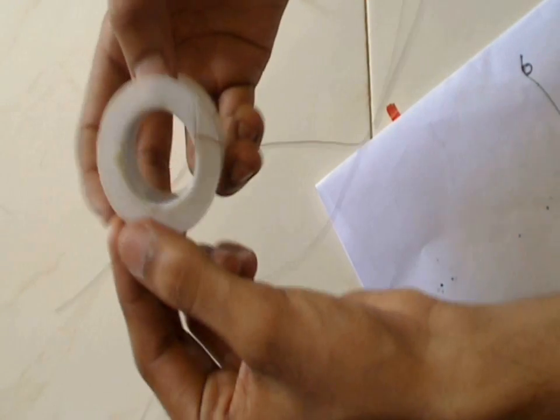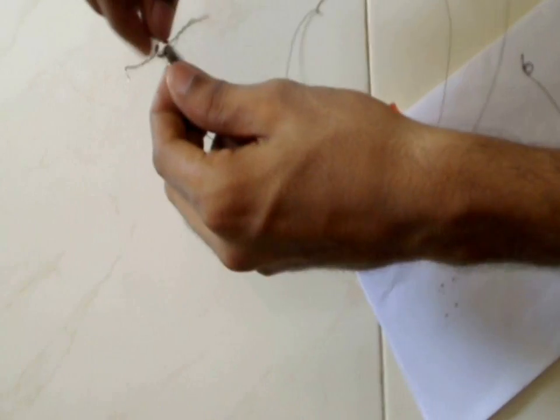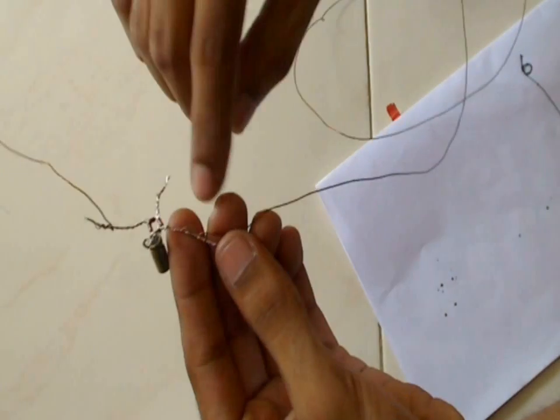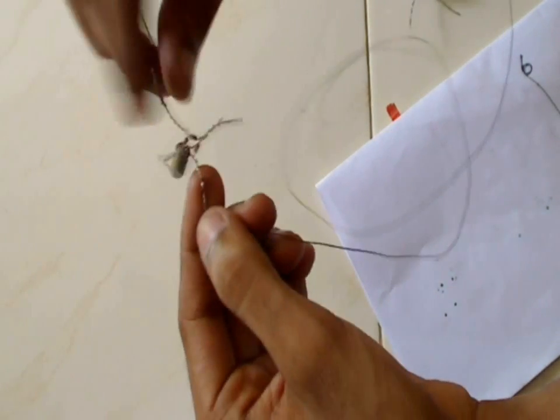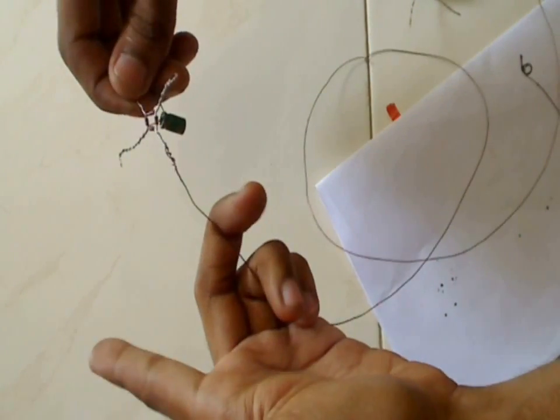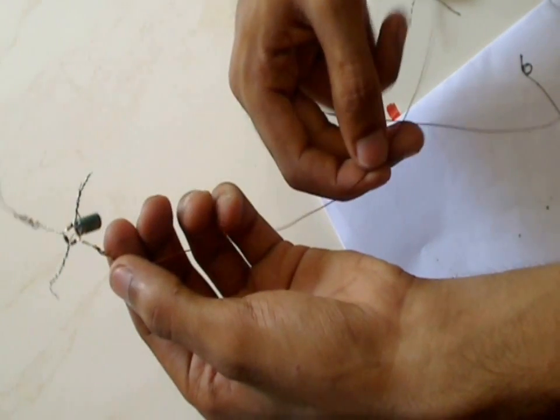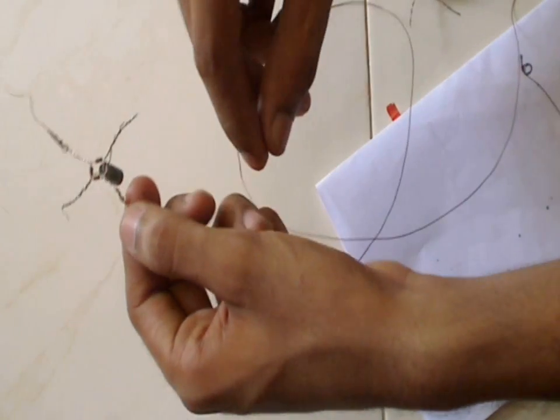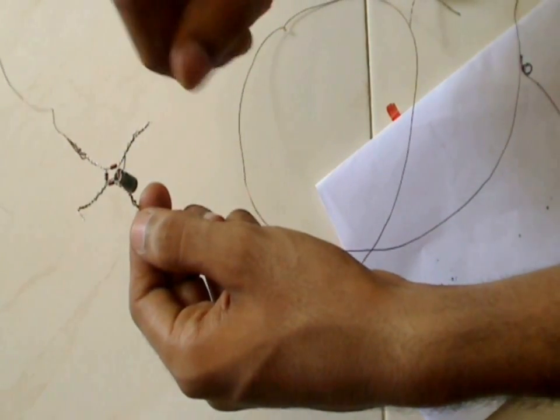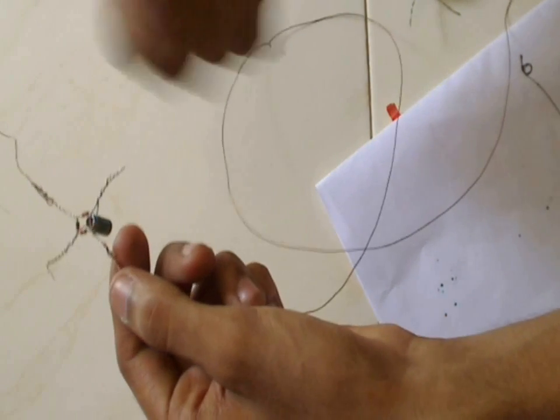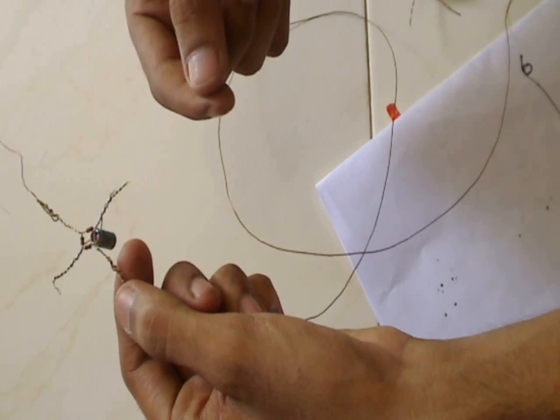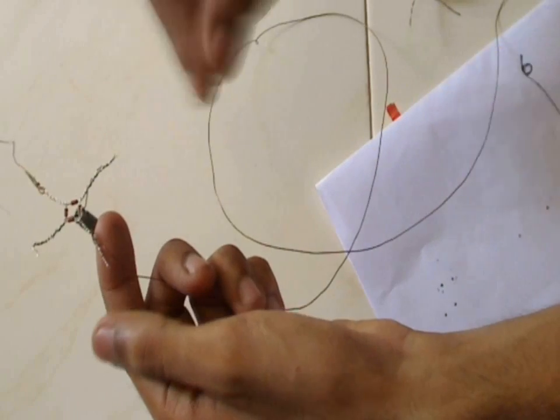One end I have left open like this. To the other end I have removed the enamel and connected to this rectifier circuit. This copper wire is an enameled copper wire so there will be insulation over it. To remove it you can either scrape it with a blade or burn it with fire and then remove it with a blade.